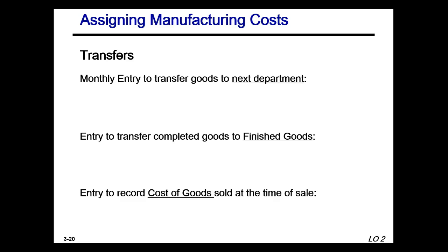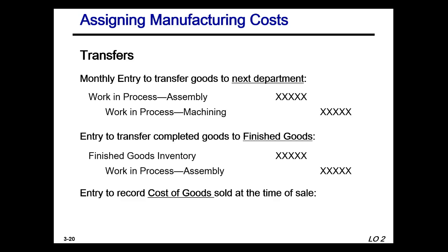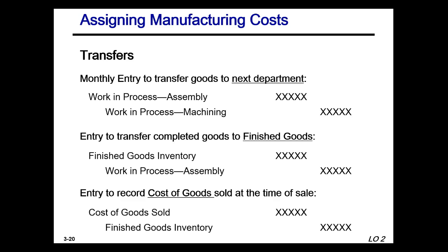In assigning manufacturing overhead, we create a journal entry that transfers goods to the next department — debiting WIP assembly and crediting WIP machining. Once the goods are completed, they go out of WIP assembly (credit) and are debited into finished goods. Once those goods are sold, they go out of finished goods (credit) and into a debit to cost of goods sold.